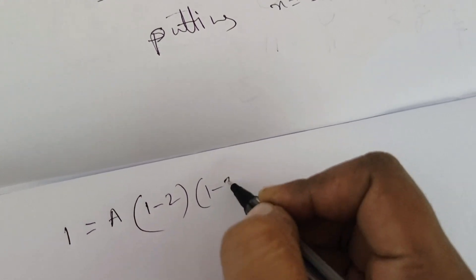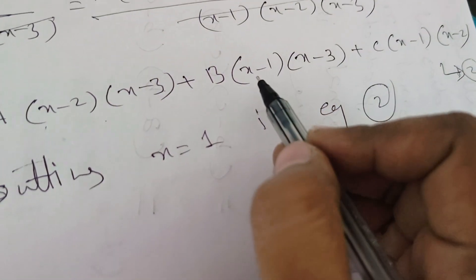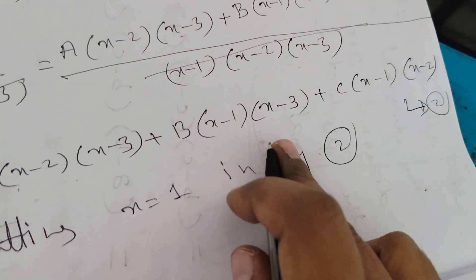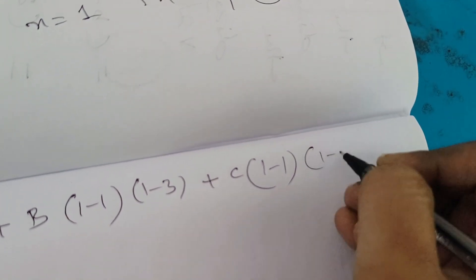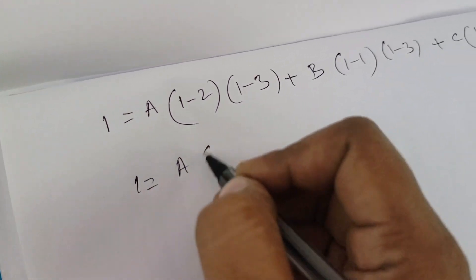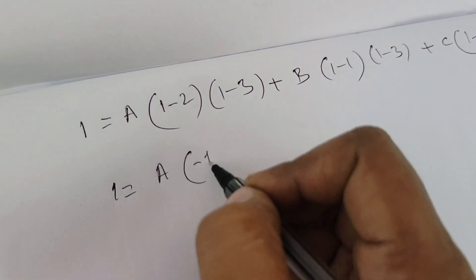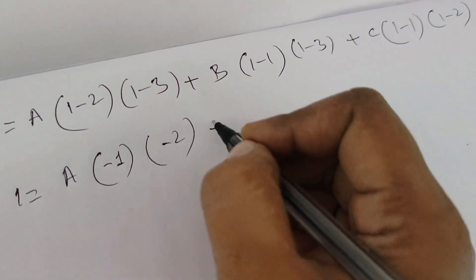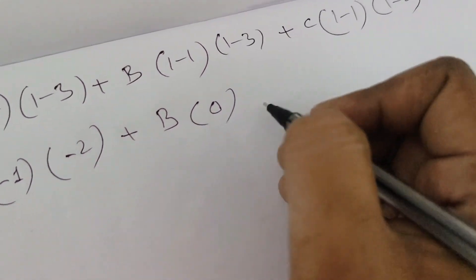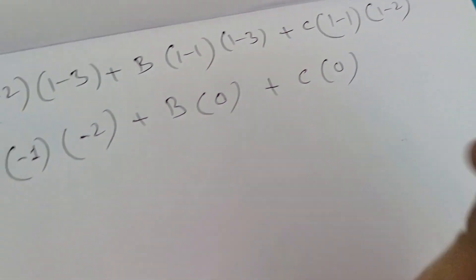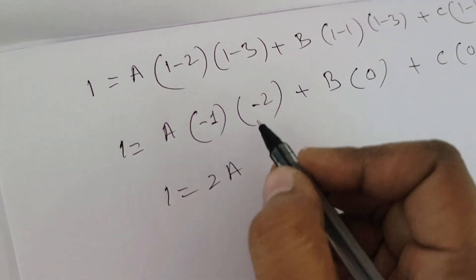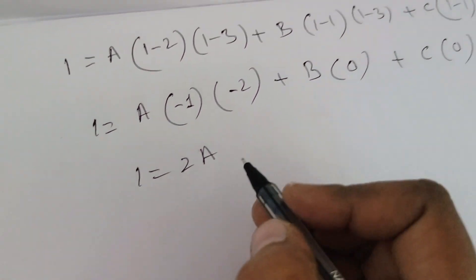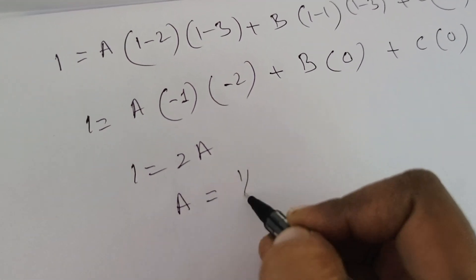So 1 = A(1-2)(1-3) + B(1-1)(1-3) + C(1-1)(1-2). Since (1-1) = 0, both the B and C terms become zero. We get 1 = A(-1)(-2) = 2A. Cross multiplying, A = 1/2.